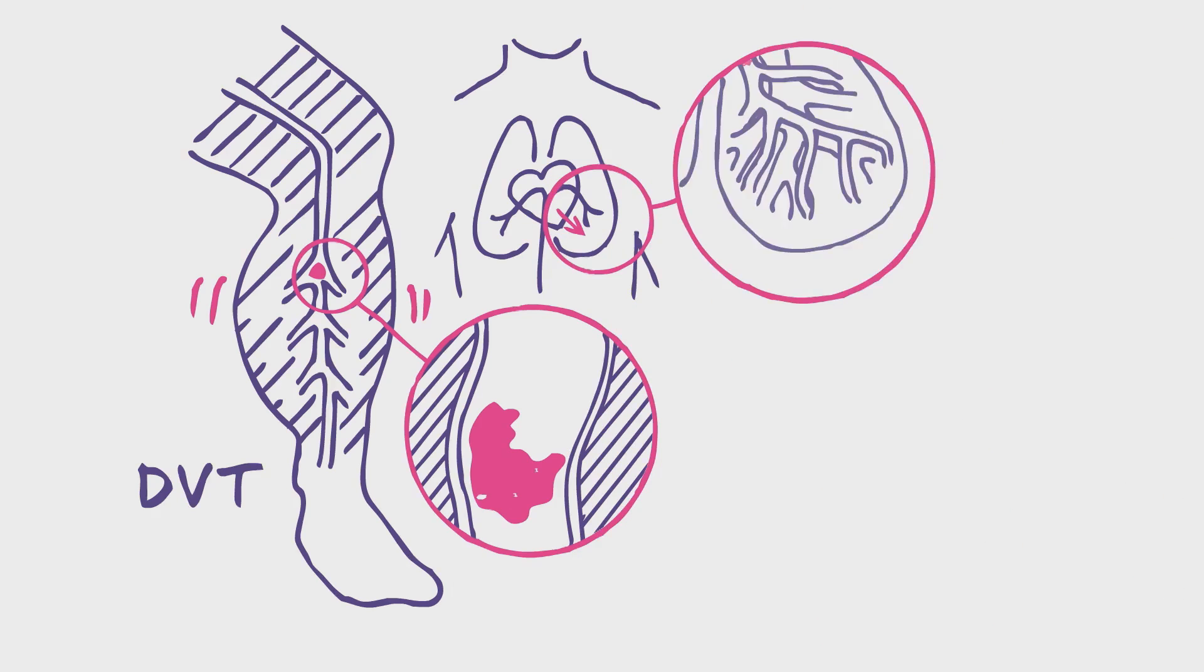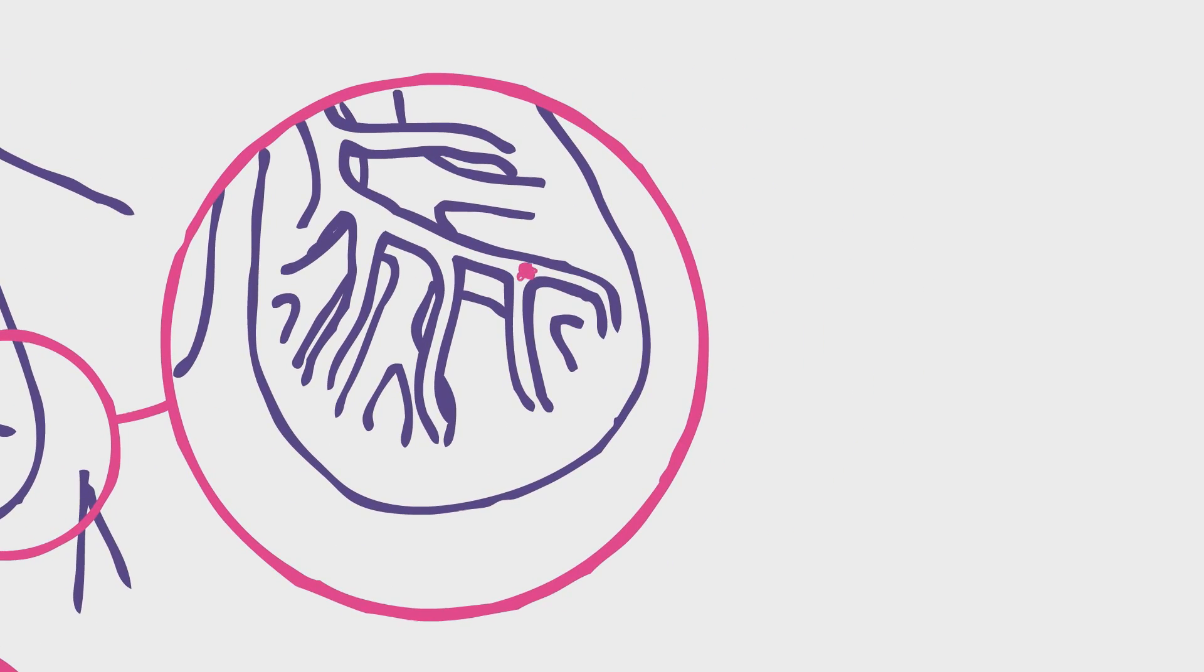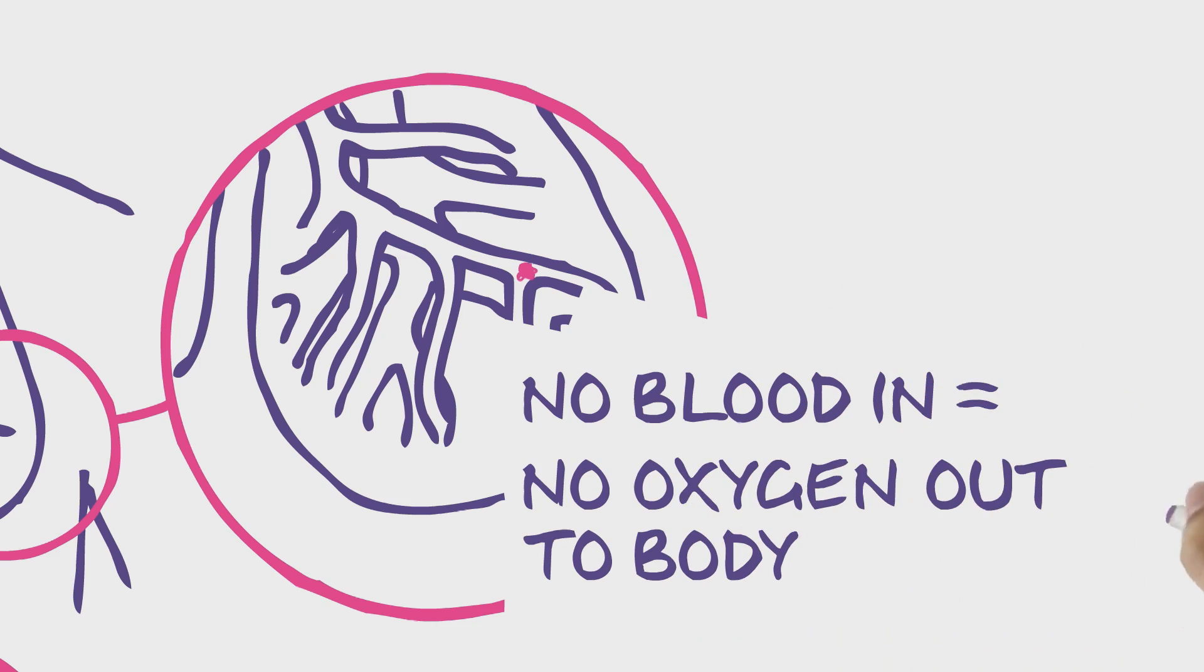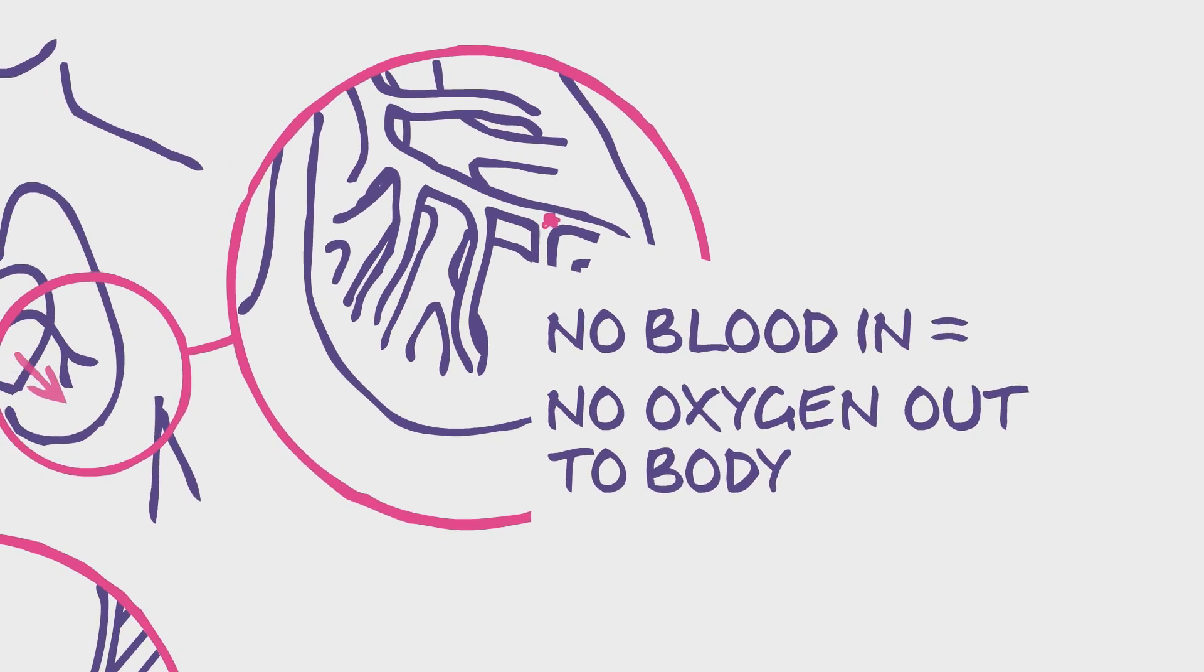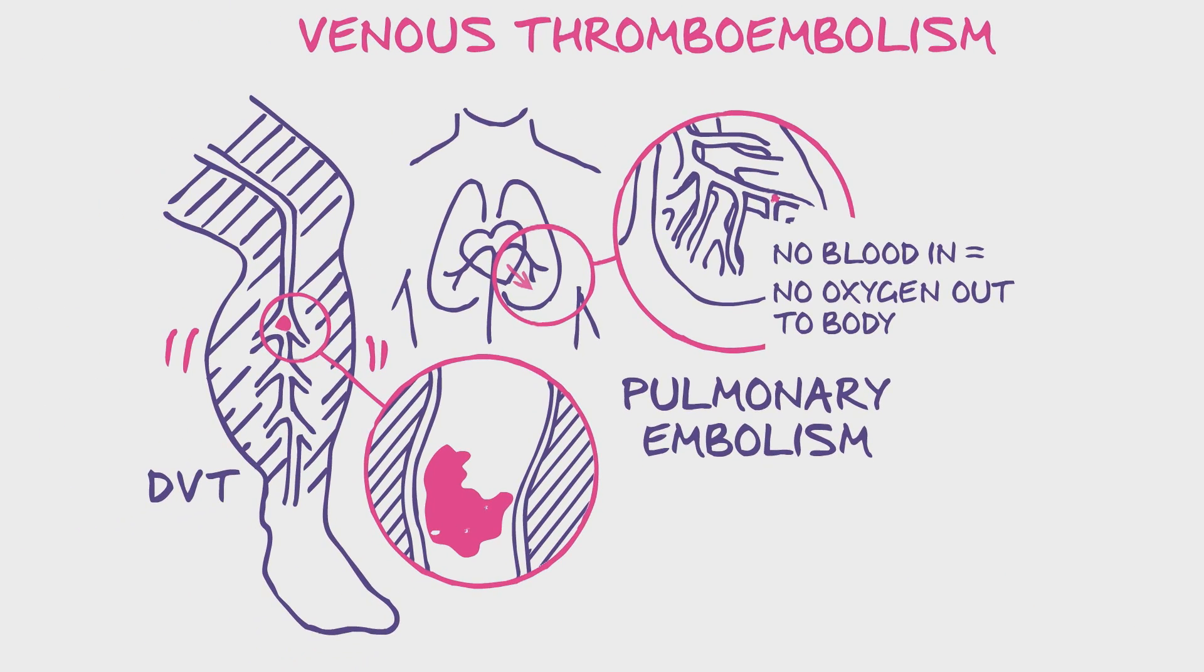Once in the lungs, the detached piece of clot can block one of the pulmonary blood vessels. When this happens, no blood can reach the area of the lung beyond the blockage, and so no oxygen will be collected from this region. This is called a pulmonary embolism, a serious and potentially life-threatening condition.